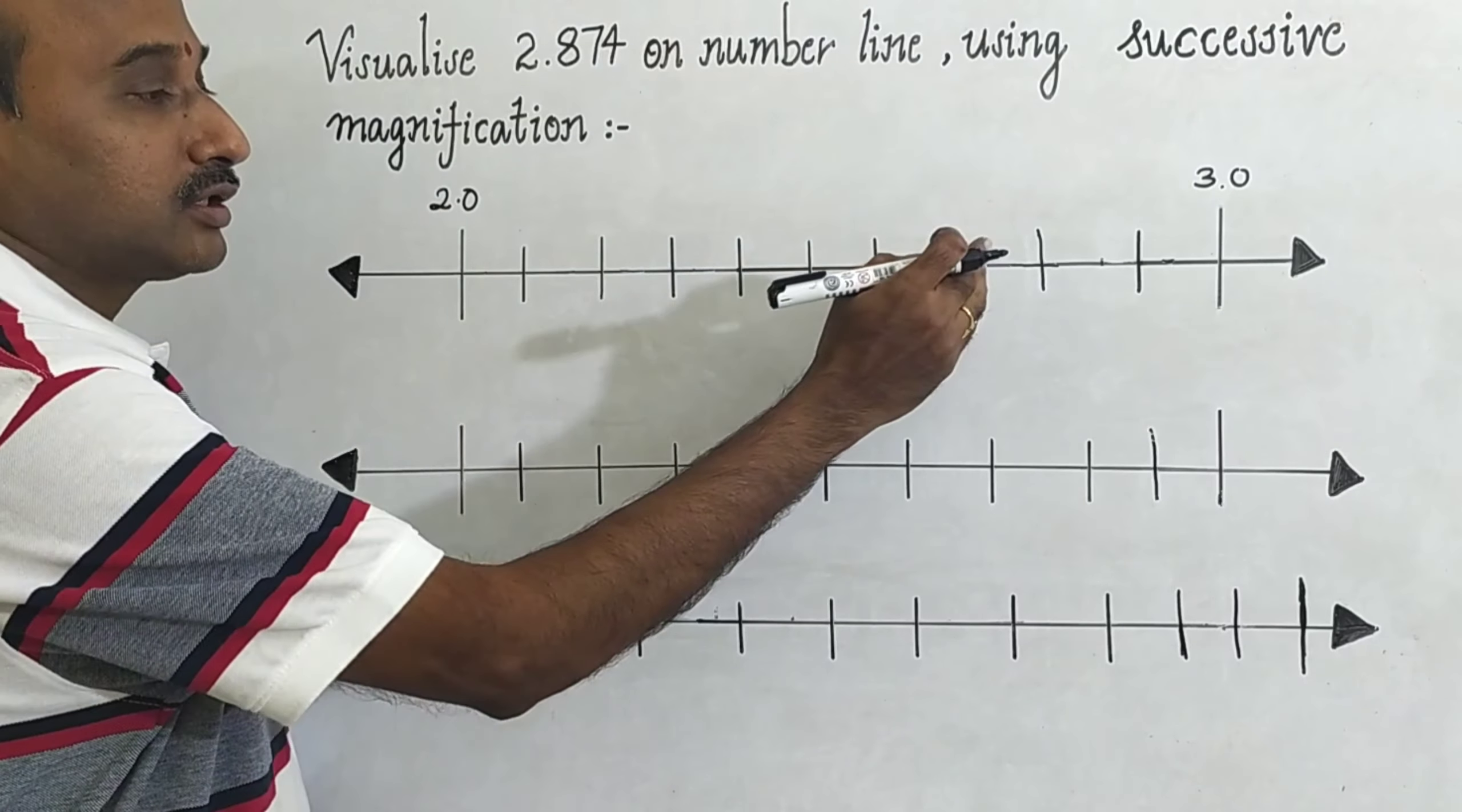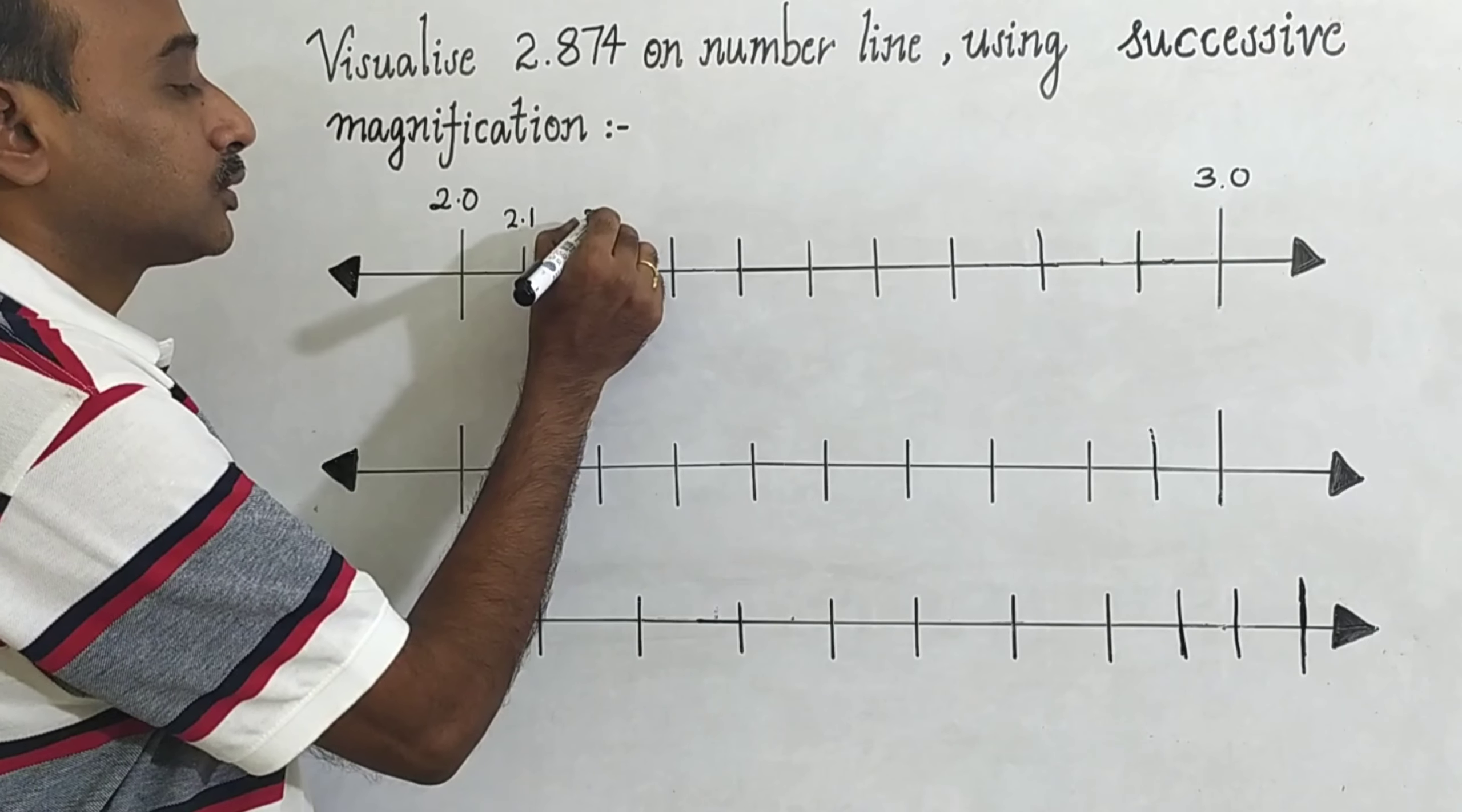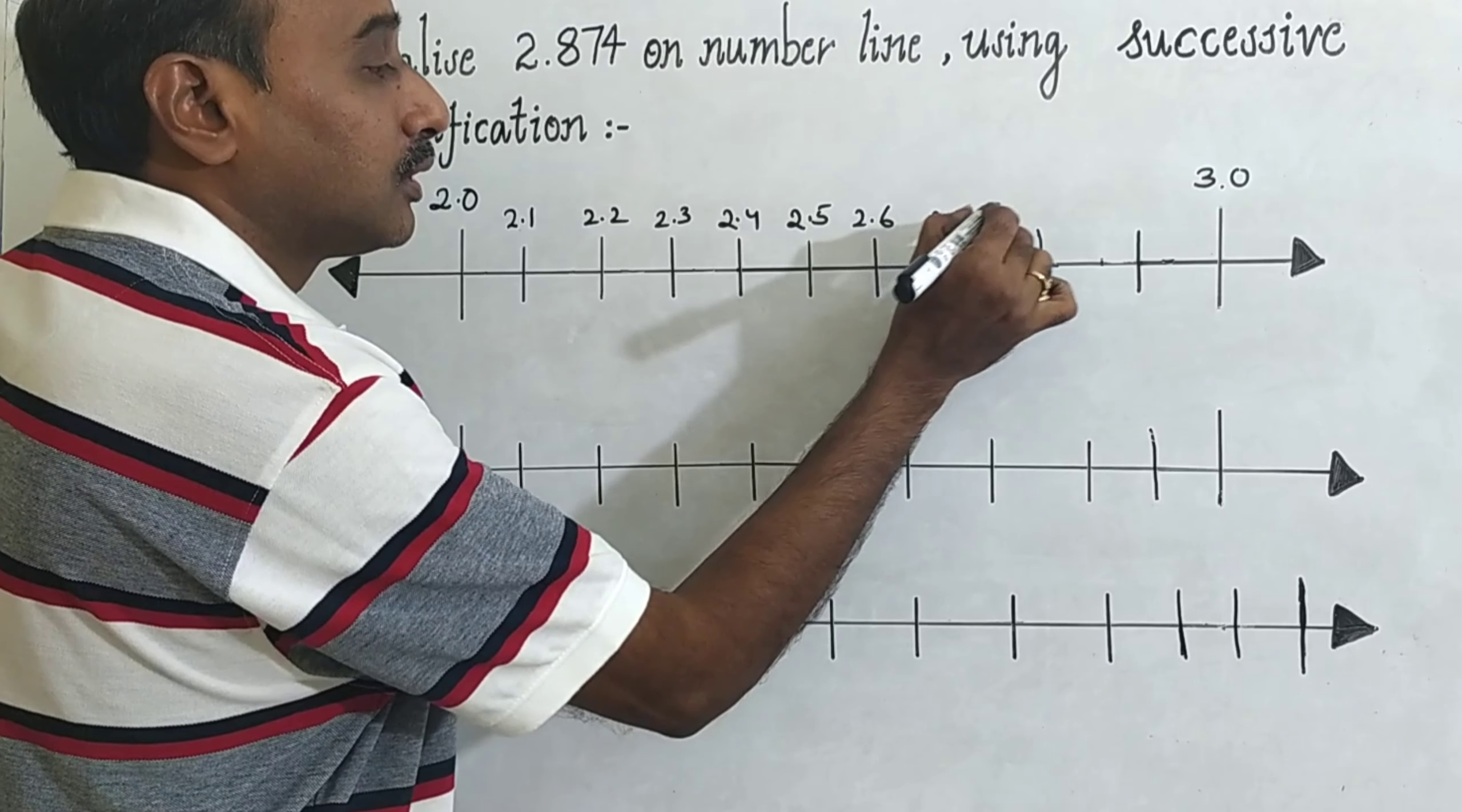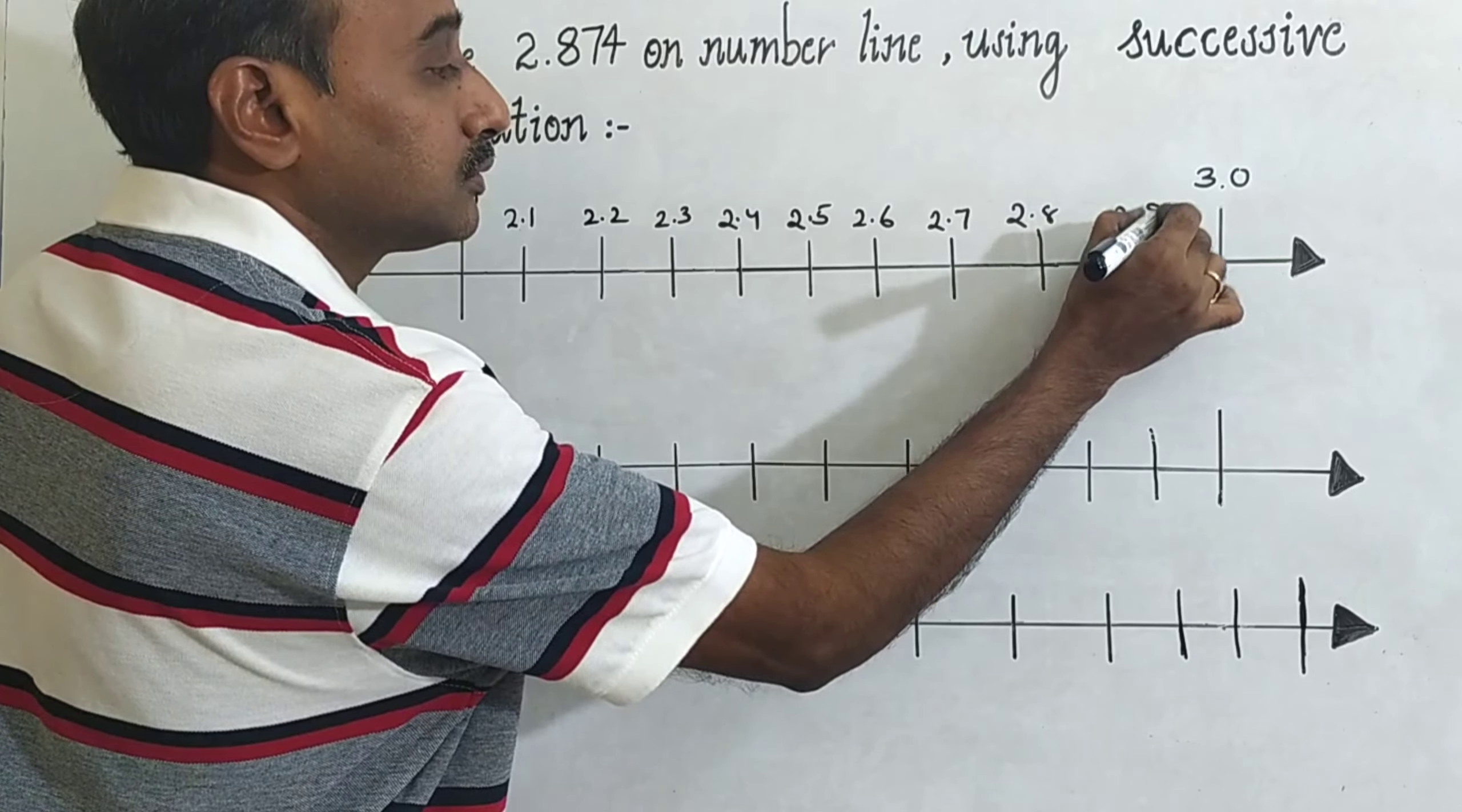this unit into 10 equal parts and then represent 2.1, 2.2, 2.3, 2.4, 2.5, 2.6, 2.7, 2.8, 2.9, this is 3.